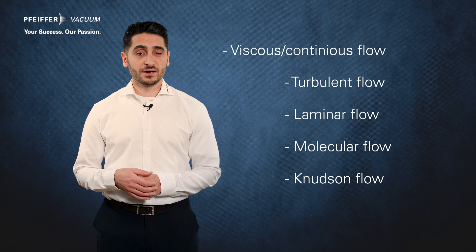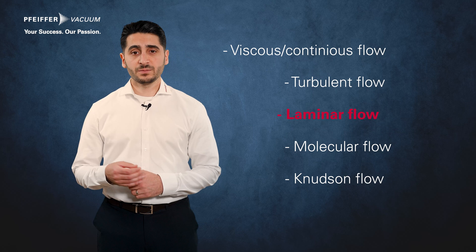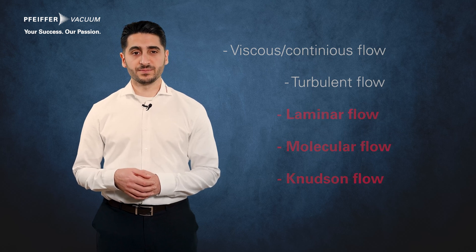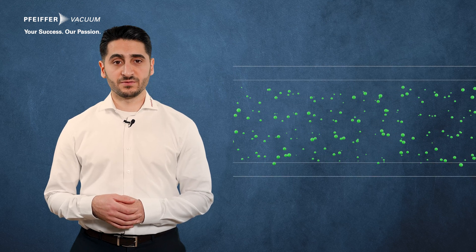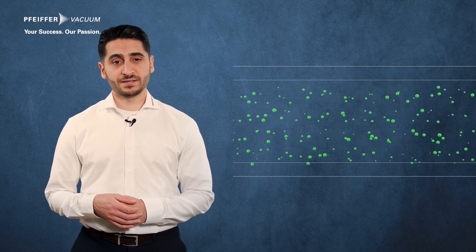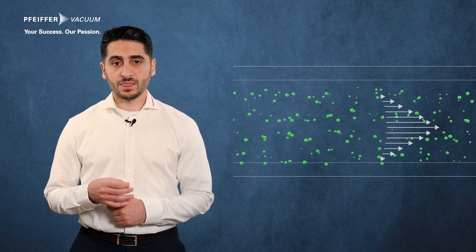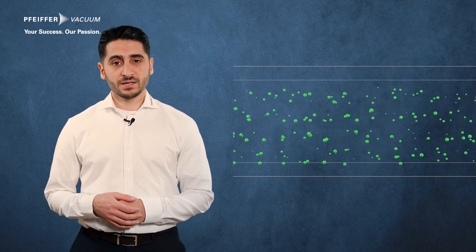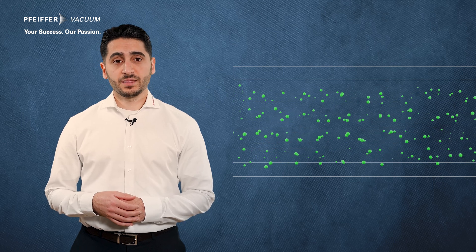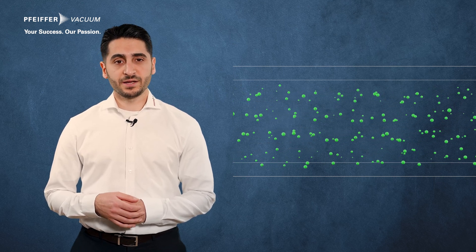In vacuum technology the dominant flow types are the laminar part of the viscous flow, the molecular flow, and the Knudsen flow. In the laminar flow range, the preferred speed direction for all the gas molecules will be identical to the macroscopic direction of flow for the gas. This alignment inevitably results from the fact that the gas particles are densely packed and collide with each other much more frequently than with the boundary walls.